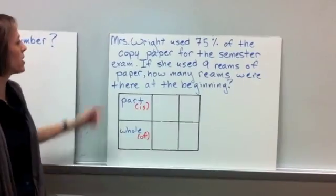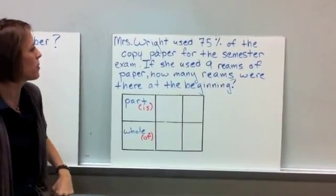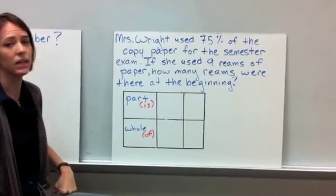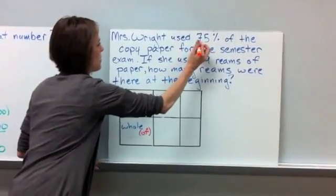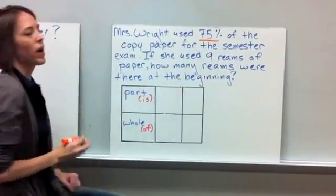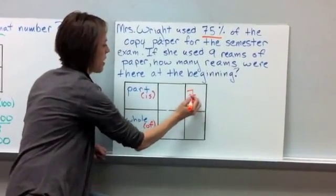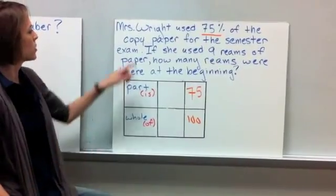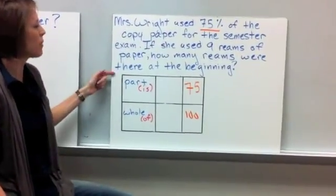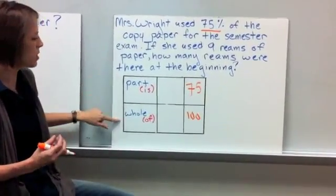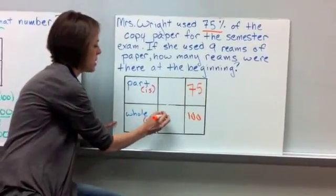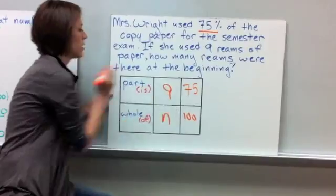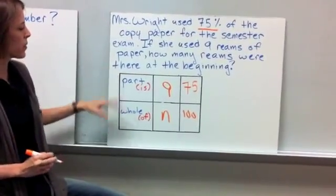All right guys, we're on to example number 3. It says Mrs. Wright used 75% of the copy paper for the semester exam. If she used 9 reams of paper, how many reams were there at the beginning? So we know already, here's our percent, 75%. And we know we write a percent is that number out of 100, so we have 75 over 100. And we're saying that she used 9 reams of paper, but we want to know how much she started with. So what she started with at the beginning is going to be her whole amount. So this is going to be your unknown or your N, and then the part that she used is going to be 9. So now that we have it set up in our nice pretty table, you're going to take that and you're going to write your proportions.